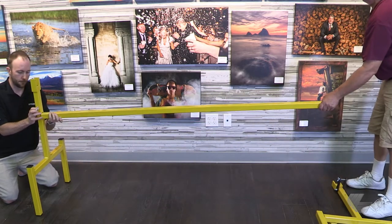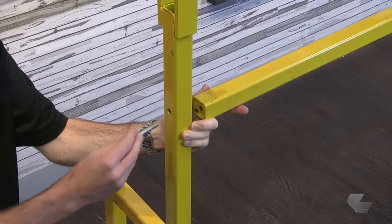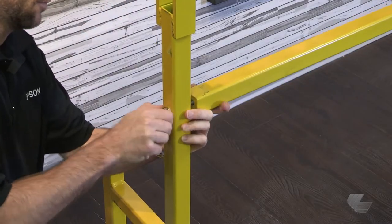After removing the parts for your Studio Canvas Master from the shipping crate, bolt the two upright legs to the crossbar using the bolts provided.